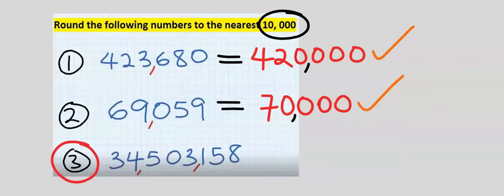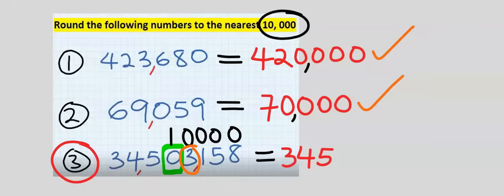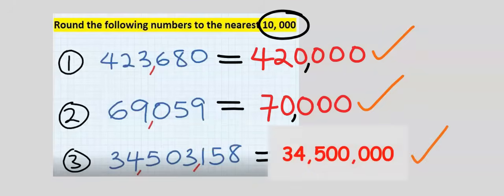Next, consider the third question. To the nearest ten thousand becomes 10,000. This zero will either be modified or it will stay the same. However, three is not up to five and cannot modify zero. Three, four, five is not affected by these modifications. Three, one, five, eight will all acquire zeros, and this becomes our answer.